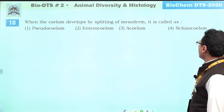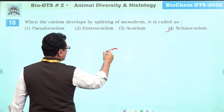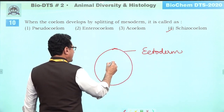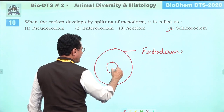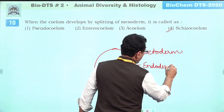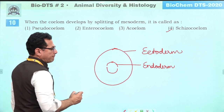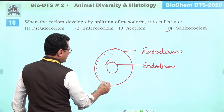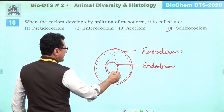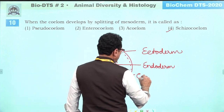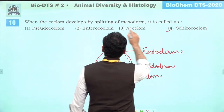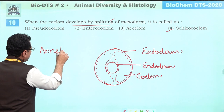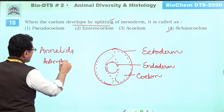The coelom which develops by splitting of mesoderm is called schizocoelom. The outermost layer is the ectoderm and the inner layer is the endoderm. Mesodermal cells split and line the entire cavity. This process is called mesodermal splitting, and the coelom formed this way is called schizocoelom. This is found in Annelida, Arthropoda, and Mollusca.